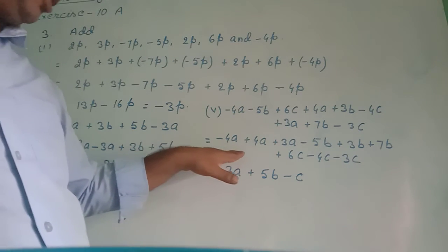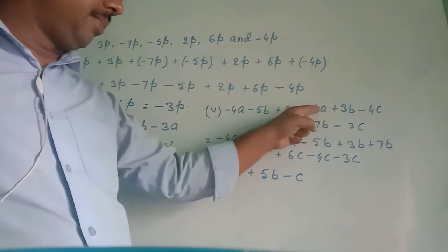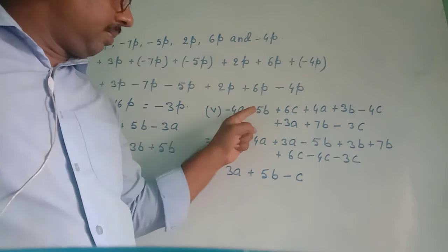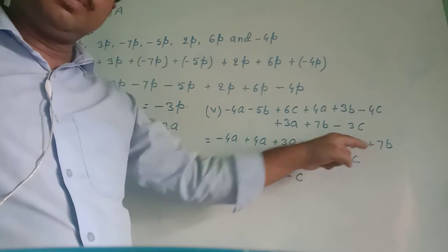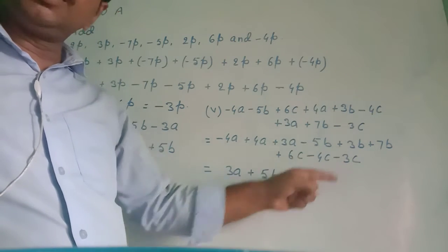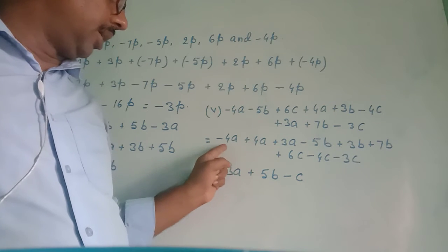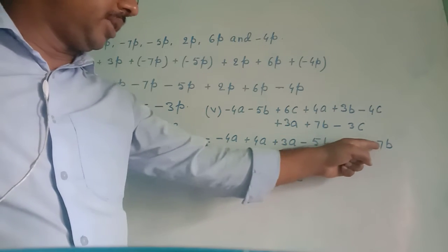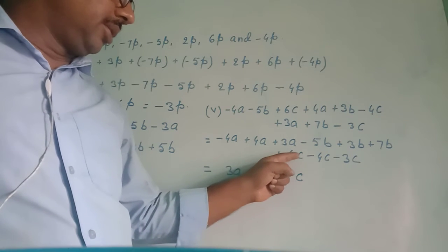In the next step, I grouped the like terms: (minus 4a plus 4a plus 3a) plus (minus 5b plus 3b plus 7b) plus (6c minus 4c minus 3c). Solving: for the a terms, minus 4a plus 4a gives 0, plus 3a gives 3a. For the b terms: 7 plus 3 is 10b, minus 5b gives 5b.